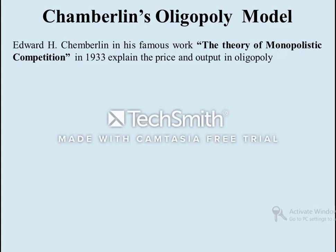In his book he explained how price and output can be determined in an oligopoly market. Duopoly is a special case of oligopoly market in which there are two sellers or firms producing homogeneous products. For example, Pepsi and Coca-Cola produce soft drinks and sell in the market, having a monopoly for selling soft drinks. Another example is AMD and Intel producing processors for computers, having a monopoly for supplying microprocessors.